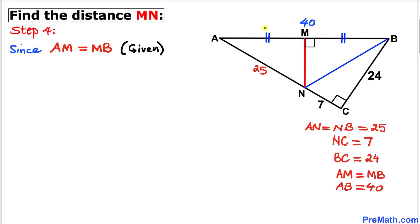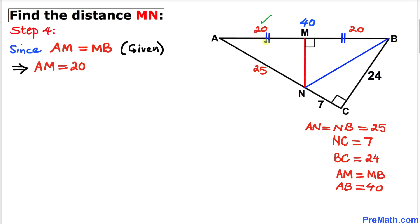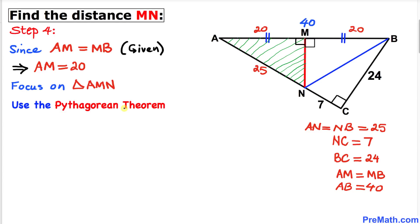Since M is the midpoint of AB, side lengths AM and MB are equal. With total AB = 40, dividing by 2 gives AM = 20 units and MB = 20 units. Now let's focus on triangle AMN, which is a right triangle, so we will use the Pythagorean theorem once more to find MN.